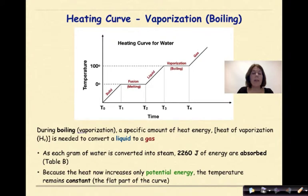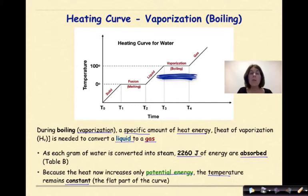During boiling, otherwise known as vaporization, a specific amount of heat energy, the heat of vaporization HV, is needed to convert a liquid to a gas. As each gram of water is converted into steam, 2,260 joules of energy are absorbed. We get that from reference table B. Because the heat now increases only the potential energy, the temperature remains constant. And again, if we look at our diagram here, we notice from T3 to T4 that we have a flat line. Temperature is remaining constant because kinetic energy is remaining constant, but potential energy is increasing.